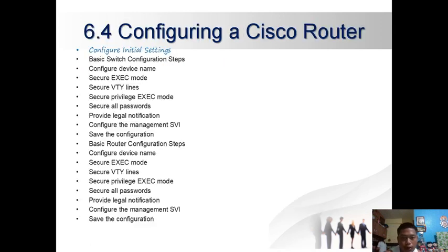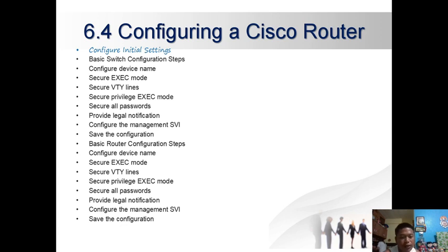Section 6.4 Configuration on a Cisco Router. Basic router configuration steps: configure device name, secure exec mode, secure VTY lines, secure privilege exec mode, secure all passwords, provide legal notification, configure management interface, and save the configuration.